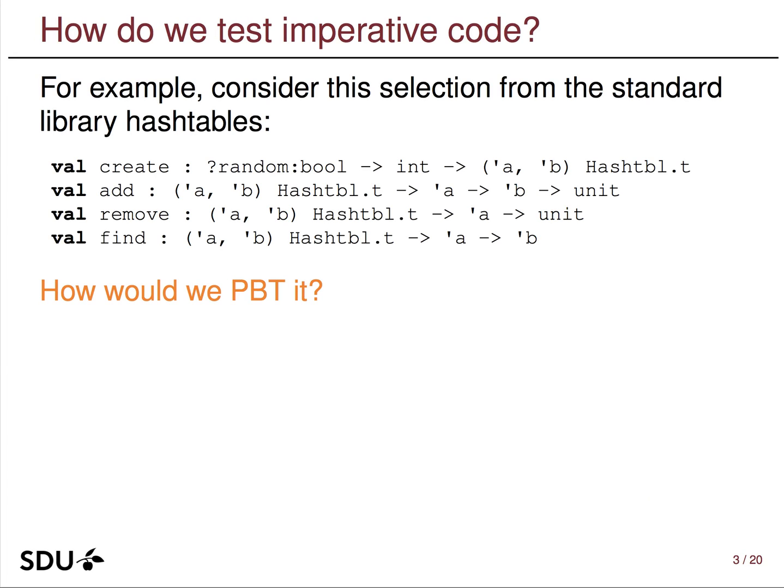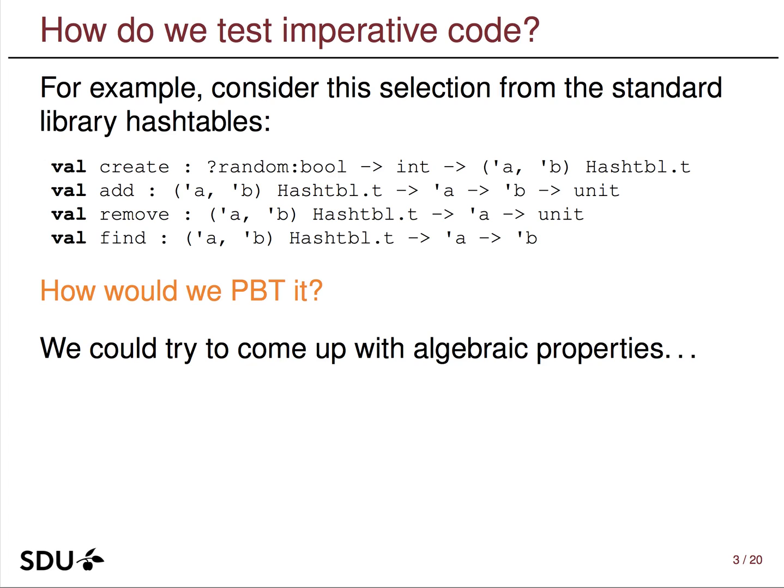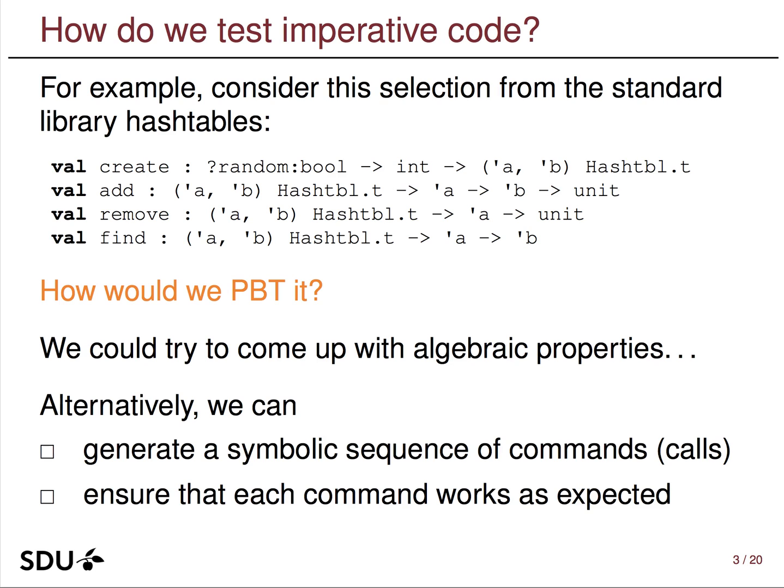That's very nice for functional code, but how about for imperative code? Take this little selection from the standard library hash tables: the ability to create a new hash table, to add an entry, to remove an entry, and to look up an entry with find. How would you property-based test something like that? We could try to come up with algebraic properties, or we could generate a random sequence of calls — which I'll call commands — represented symbolically, and then ensure each command in the sequence works as expected.